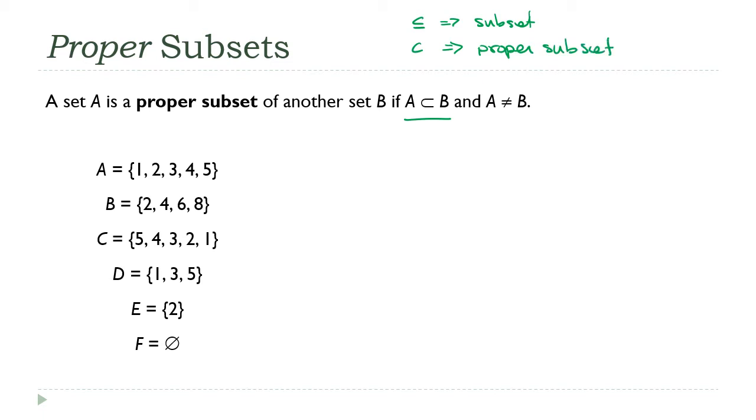How does that work down here? Well, E is not only a subset of B, which we saw on the last slide, E is also a proper subset of B. Because E is contained in B, but E is not equal to B. So in this case, it's both - it's a subset and a proper subset.